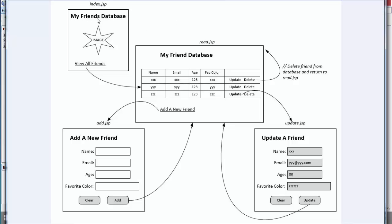Our index page will have a title, and there might be some images on there eventually. 'View all friends' — when you click that link, it will open up read.jsp. Read.jsp will use those servlets to query the database and return all of the database records into an HTML table.